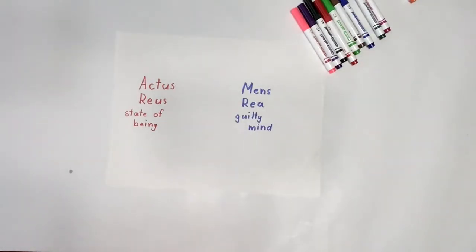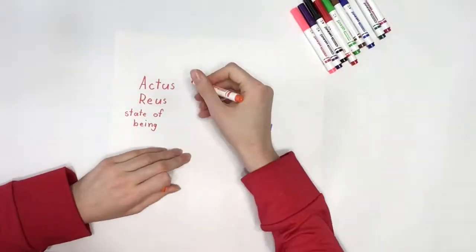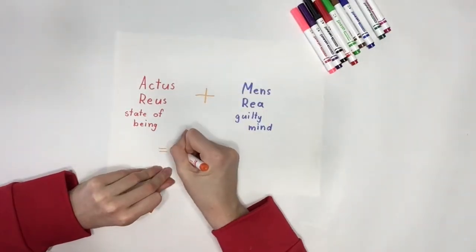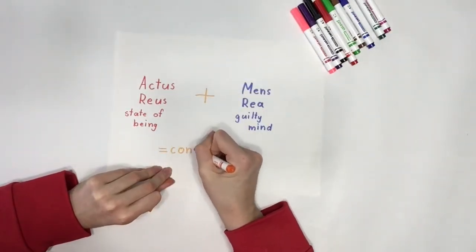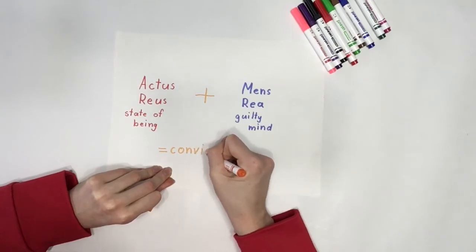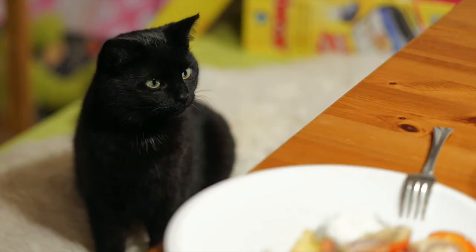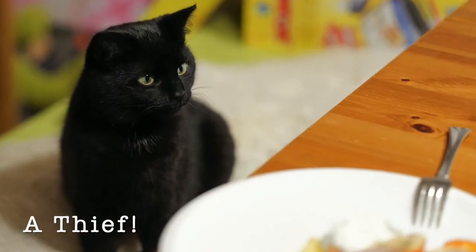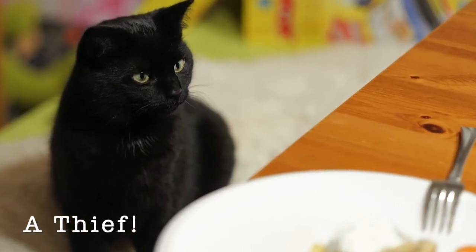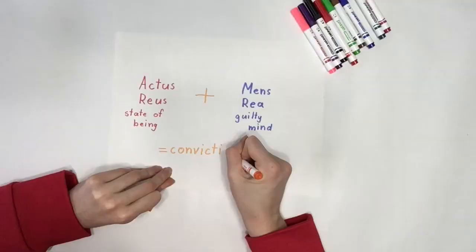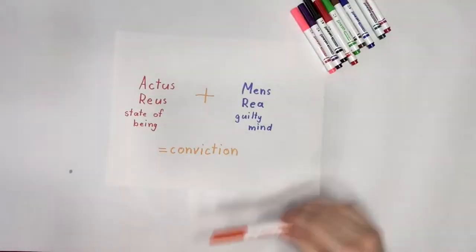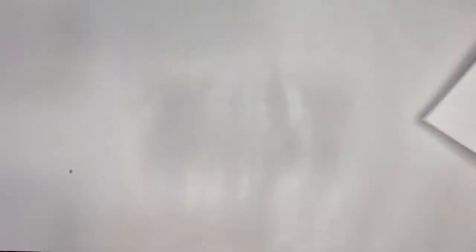For example, if a person accidentally forgets to pay for something at a store, they have only committed the act of stealing. If they then return the item or pay for it, that proves that they did not intend to take the item. In contrast, if they decide to keep the item knowing they stole it, then they also have the aspect of a guilty mind.